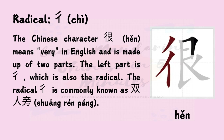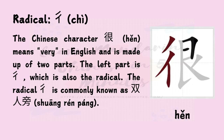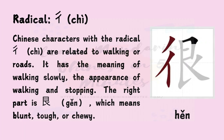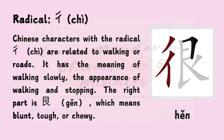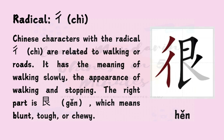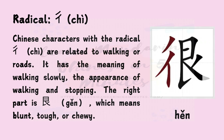The Chinese character 很 means 'very' in English and is made up of two parts. The left part is 彳, which is also the radical. The radical 彳 is commonly known as 双人旁. Chinese characters with the radical 彳 are related to walking or roads. It has the meaning of walking slowly and the appearance of walking and stopping. The right part, 艮, means blunt, tough, or chewy. 很 is a picto-phonetic word; 艮 indicates the sound and 彳 conveys the meaning.